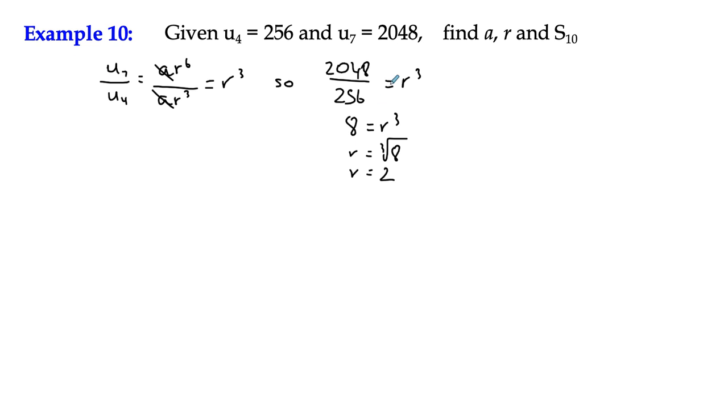We've got r, so we want to work back and find a. We can do that from one of our terms. We're told that U4 is 256. We know that U4 is ar cubed, which equals 256.